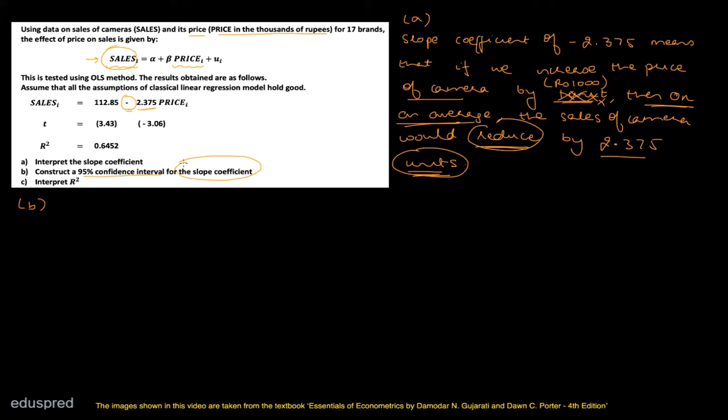In Part B, we have to construct a 95% confidence interval for the slope coefficient. Confidence intervals are always constructed for population parameters, so we have to construct a 95% CI for beta, which is the population parameter.